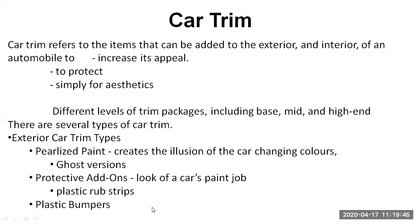These are also protective add-ons. Plastic rubber strips can be added — for example, just above your vehicle doors, you have exterior plastic trim which makes sure that water falling on the roof when it is raining does not fall directly on passengers below the door or on the window. It will be directly thrown down to the ground.